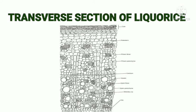This is the transverse section diagram for unpeeled licorice roots. It shows cork, phellogen, xylem, phloem, medullary rays, and calcium oxalate crystals in the section.